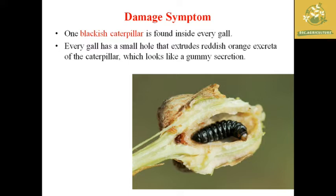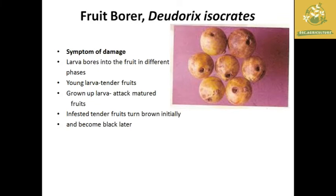We can see a blackish caterpillar found inside every gall, making it an important pest of Amla. There is also a gummy secretion caused by these insects.